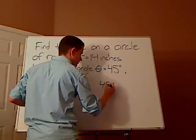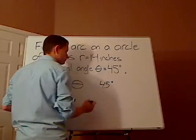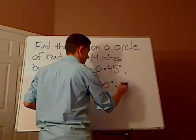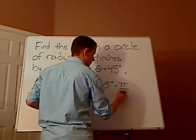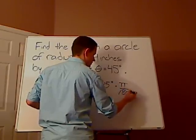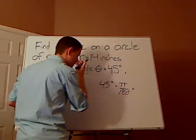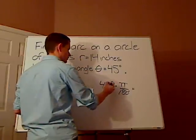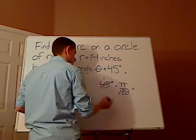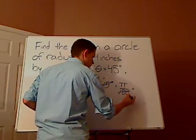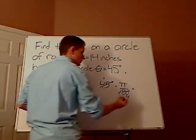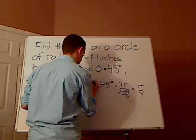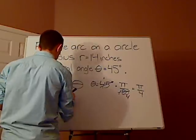So I have 45 degrees. I'm going to multiply that by a creative 1, which is pi over 180 degrees. 45 does go into 180, and it goes in 4 times. So this is pi over 4. That's my theta.